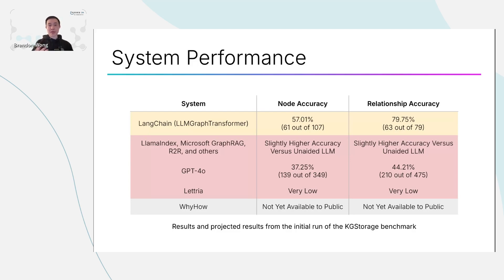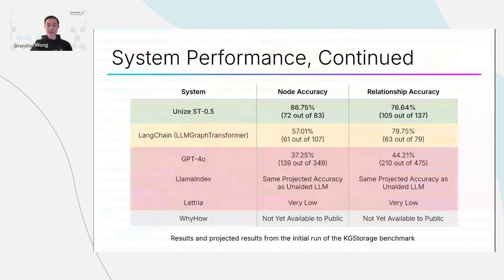For example, with LLM Graph Transformer, we're seeing on this very difficult benchmark 57% performance on node accuracy — how many nodes are correct, excluding duplicates and other errors. At UNICE, we've developed Unise Storage, a system that is also generating knowledge graphs from text, and we've been able to achieve pretty high accuracy even on this challenging task. It's important to note this is the preview release of the system, so there are a lot of improvements that could potentially be made. But even with that, we've achieved node accuracy and overall accuracy that are quite high.